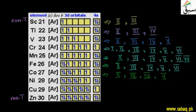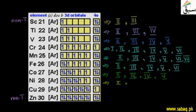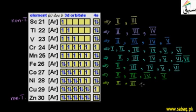Now we talk about nickel. Nickel first shows oxidation state +2, when the 4s electrons are lost. After that, unpaired electrons in the d-orbital can also be removed. As the number of unpaired electrons decreases — losing one gives oxidation state +3, and losing another unpaired electron gives oxidation state +4. So nickel shows oxidation states +2, +3, and +4.